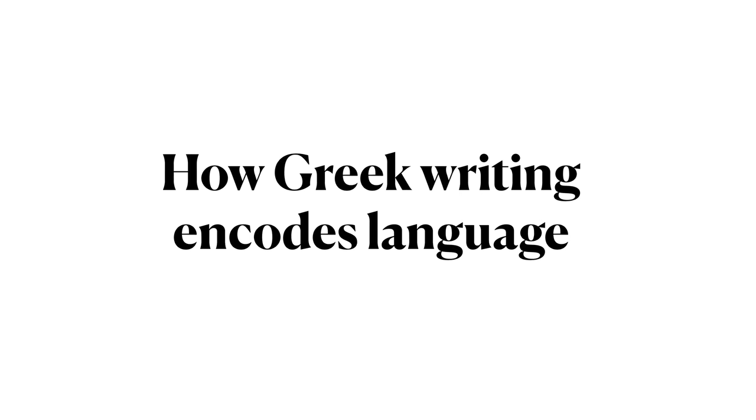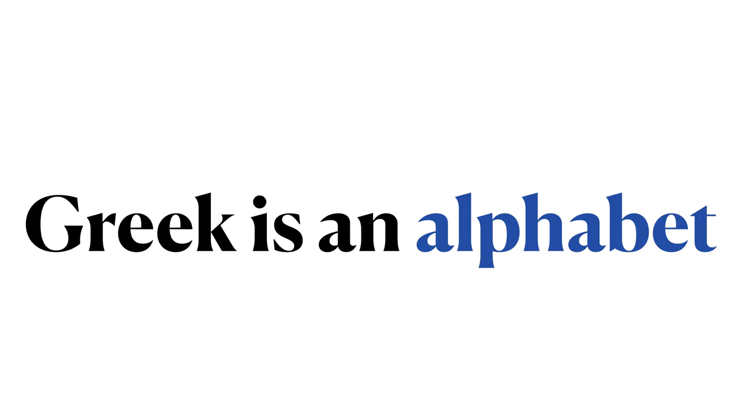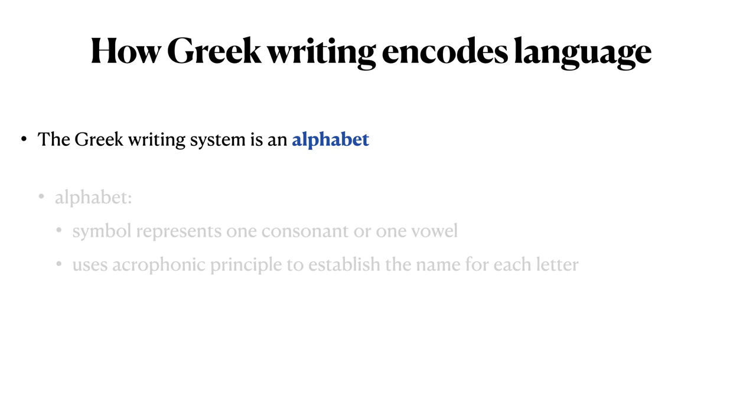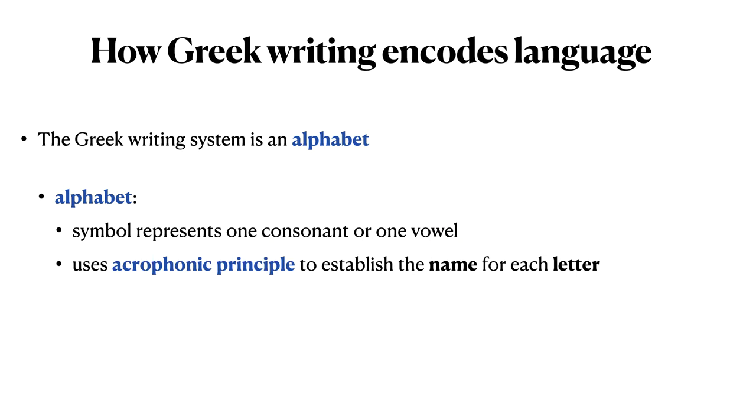So let's summarize. How does Greek writing encode language? It does so by representing sounds. It represents consonants and vowels. Consonants and vowels are each represented using their own respective symbols in the alphabet. The Greek writing system is an alphabet. An alphabet is a writing system where each symbol represents a sound, and each symbol could represent either a consonant or a vowel. In the Greek writing system, the acrophonic principle was used to establish the name for each letter.